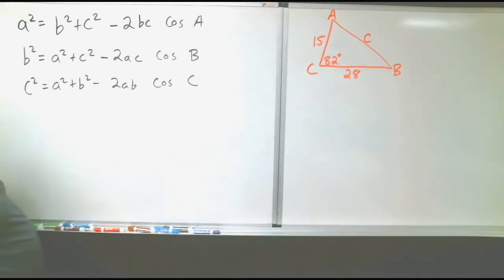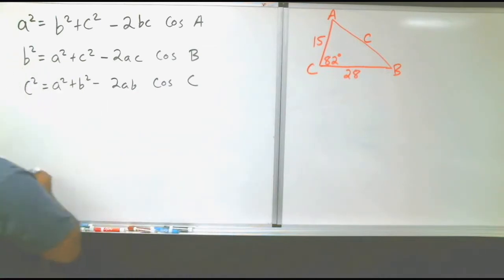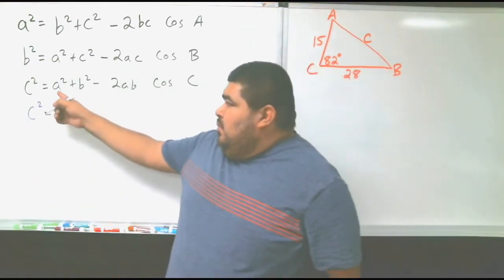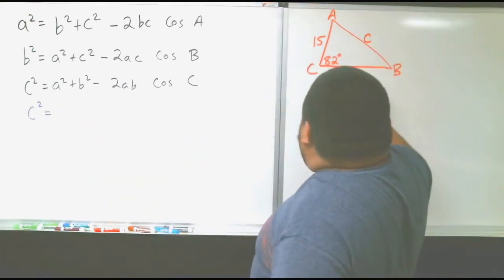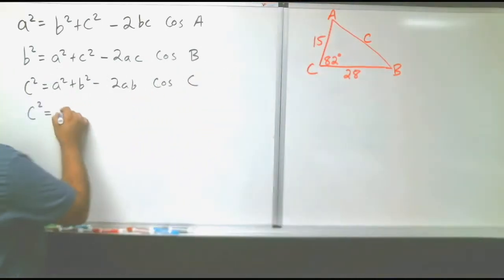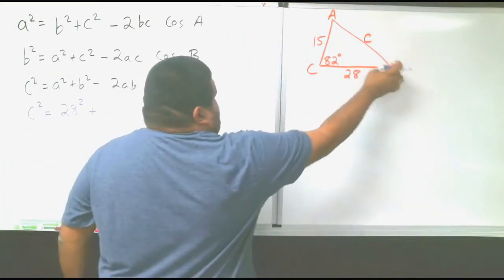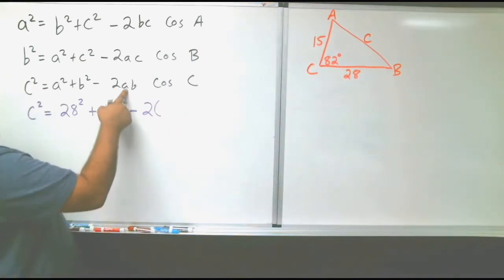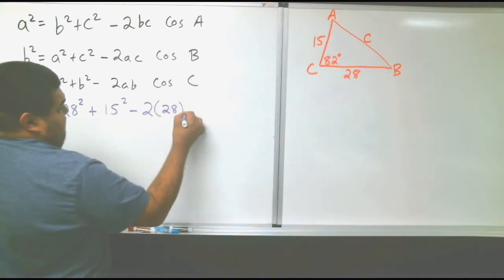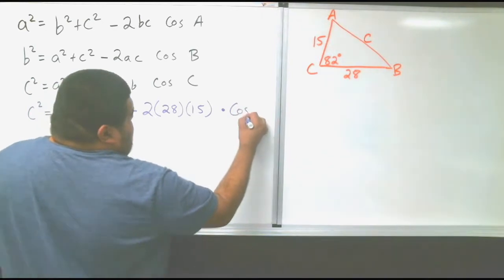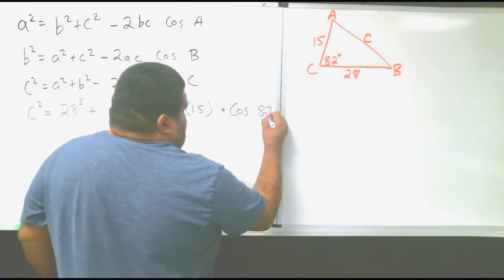So we're going to use the bottom one, which is C squared equals. We have A, A is 28, because remember, across from capital A is lowercase a. So we have 28 squared plus B squared. We have capital B, so we have lowercase b, which is 15, squared minus 2 times a, which we have A, which is 28. We have B, which is 15, times cosine of C, which in this case cosine of C is 82 degrees.